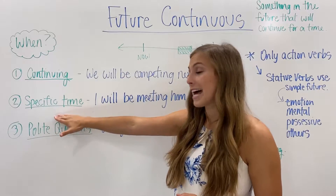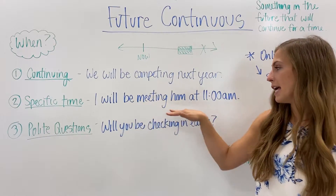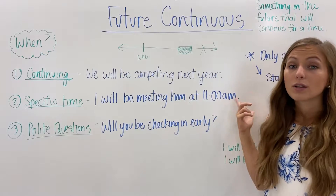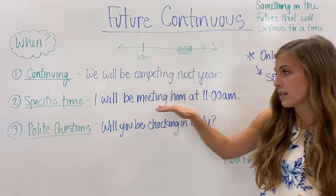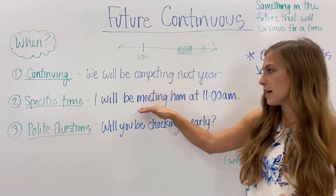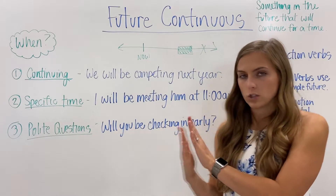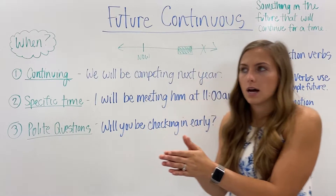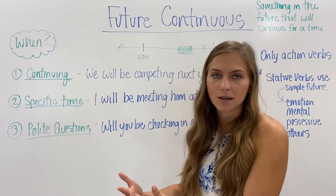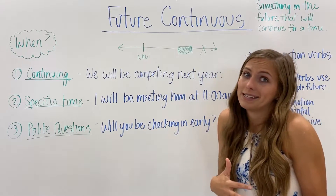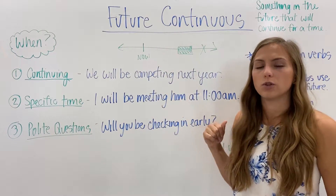Number two: something that happens at a specific time. We can use the future continuous tense with a specific time. For example, "I will be meeting him at 11 a.m." Another reason we can use the future continuous here is because the verb "meeting" — having a meeting — is an action verb that occurs over time. Normally a meeting is 30 minutes or an hour long, so it is something that continues. That is another reason why we can use the future continuous in this example.